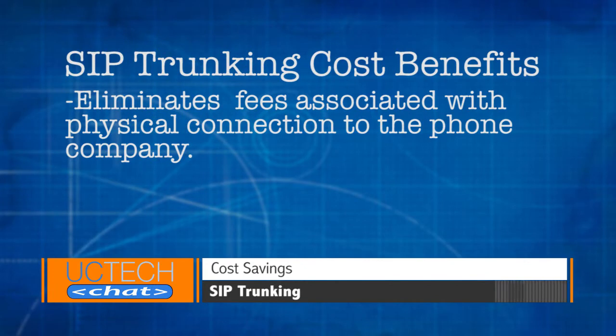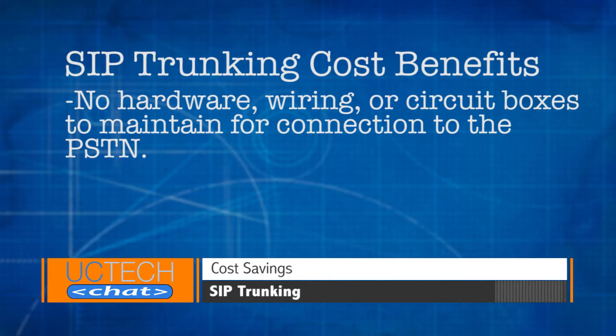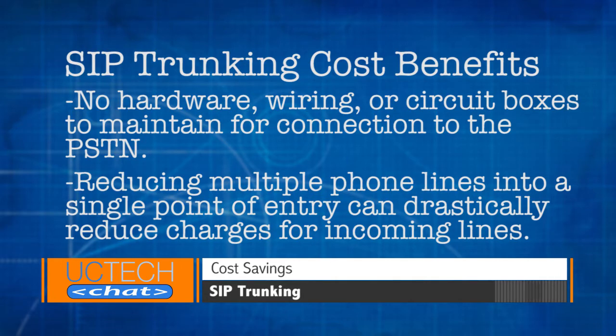SIP Trunking also eliminates the physical connection to the phone company. There's no need to roll a truck to your location to install a circuit or support a circuit. There are also no hardware, wiring, or circuit boxes to maintain for connection to the PSTN. Reducing multiple phone lines into a single point of entry can drastically reduce charges for incoming lines. Analog lines still have their benefits in use cases, however. If you have fax machines, credit card machines, modems, or alarm systems, sometimes keeping analog lines for those applications is preferred.